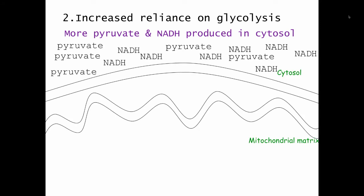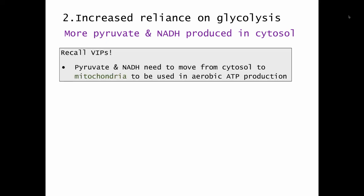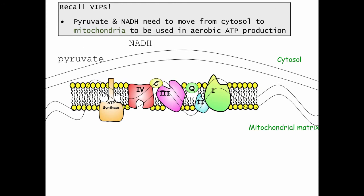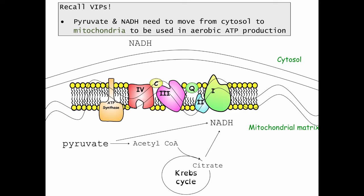So as you can see here, I've illustrated this. Instead of just having a little bit of pyruvate and a little bit of NADH in the cell, we have excessive amounts of it. And recall that pyruvate and NADH need to move from the cytosol to the mitochondria to be used in aerobic ATP production. So pyruvate needs to move into the mitochondrial matrix where it becomes acetyl-CoA, enters the Krebs cycle, and NADH is produced.